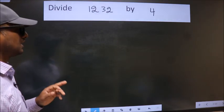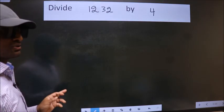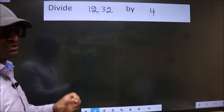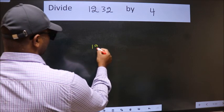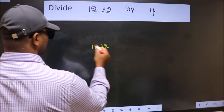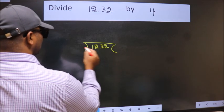Divide 1,232 by 4. To do this division, we should frame it in this way. 1,232 here, 4 here.